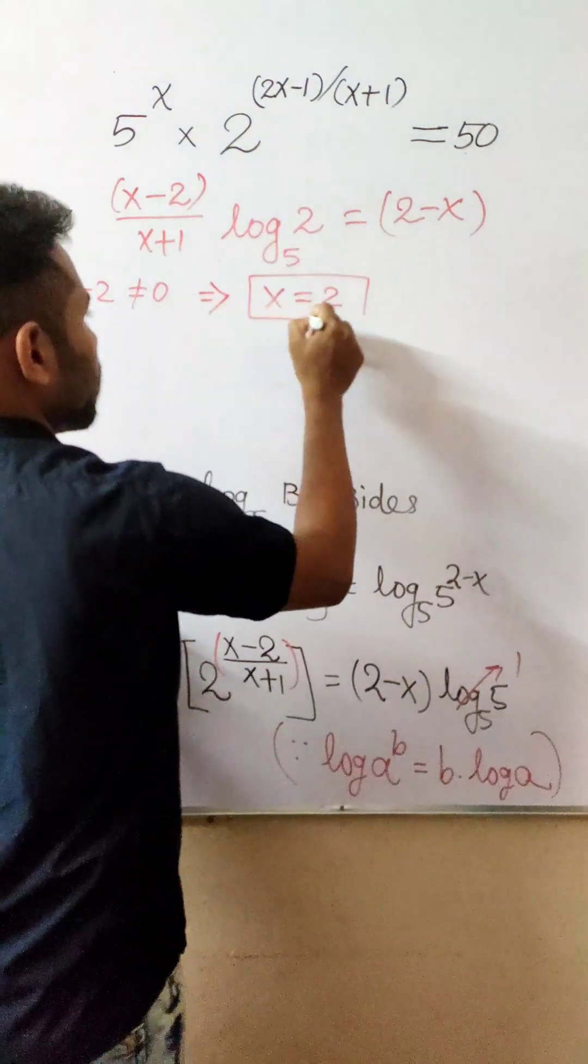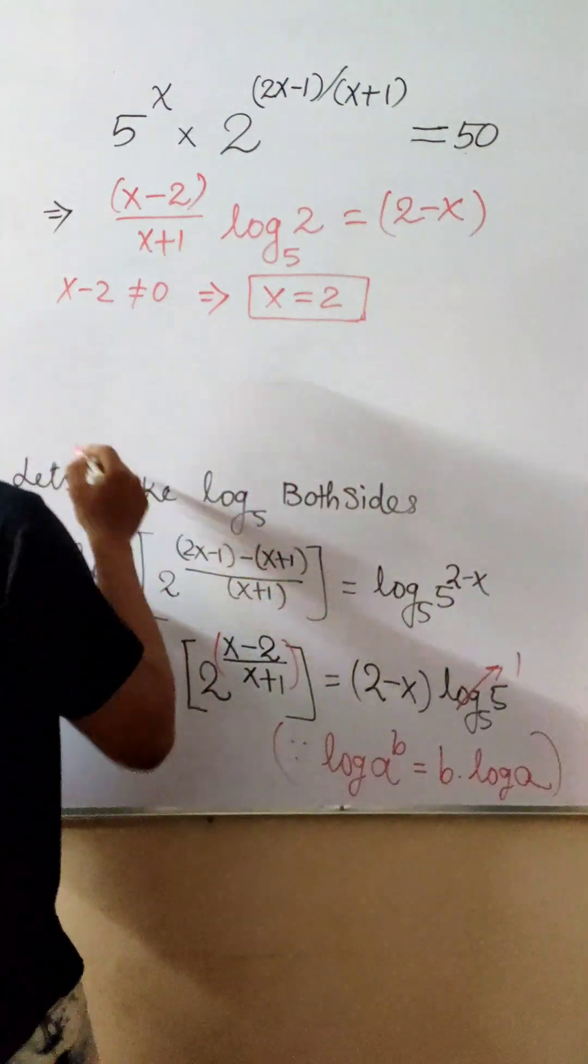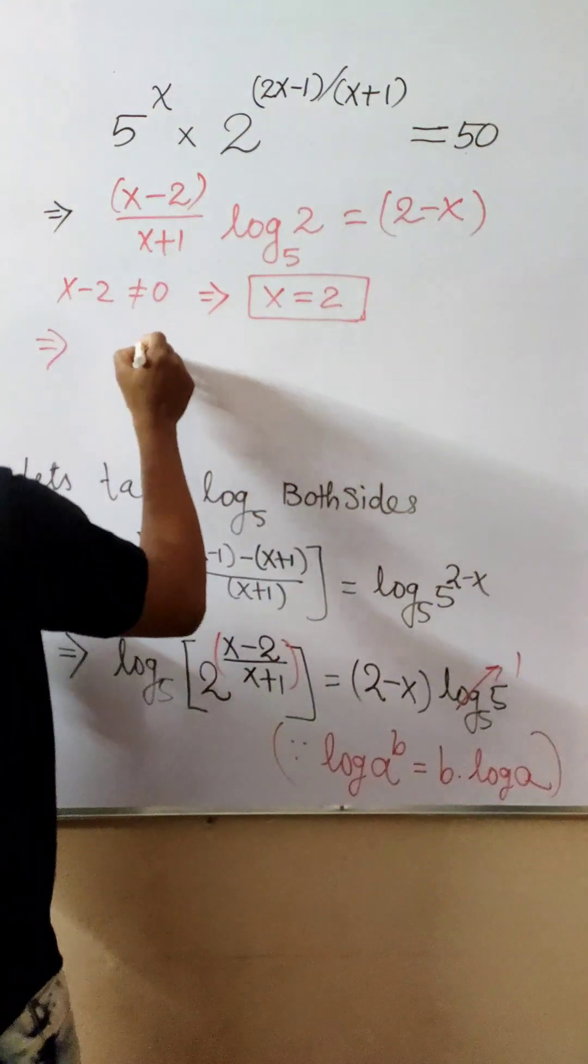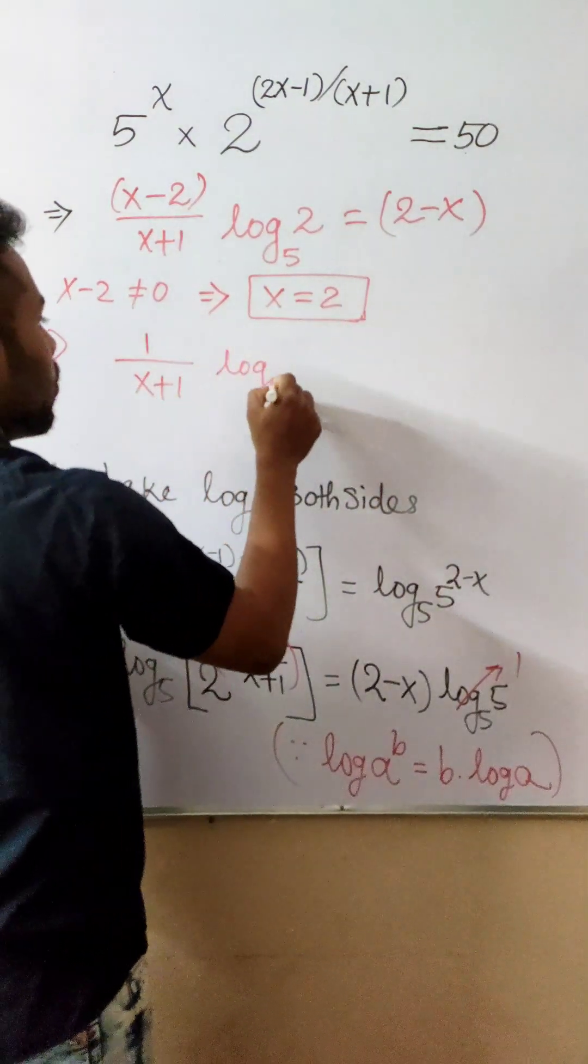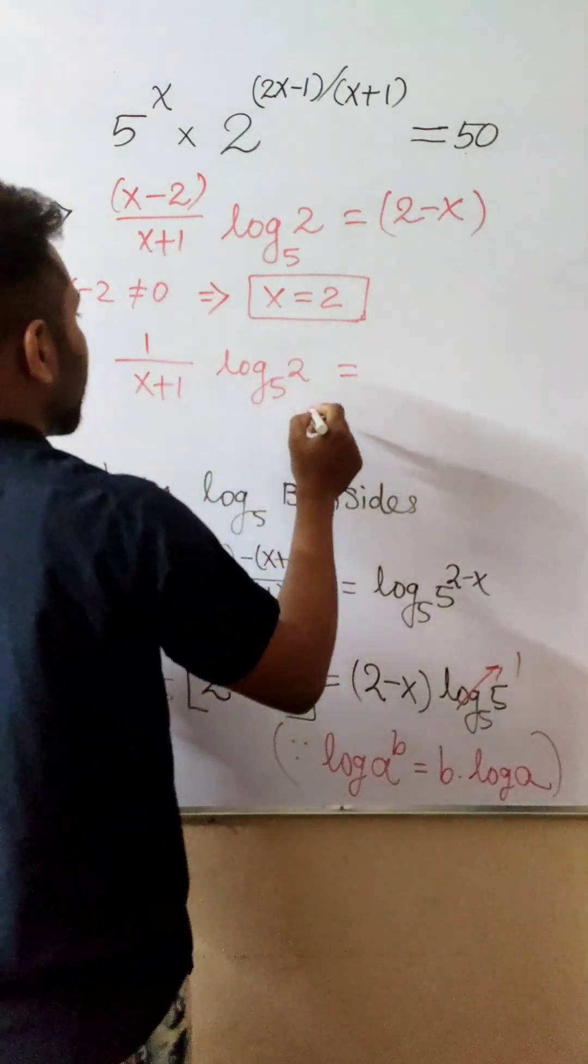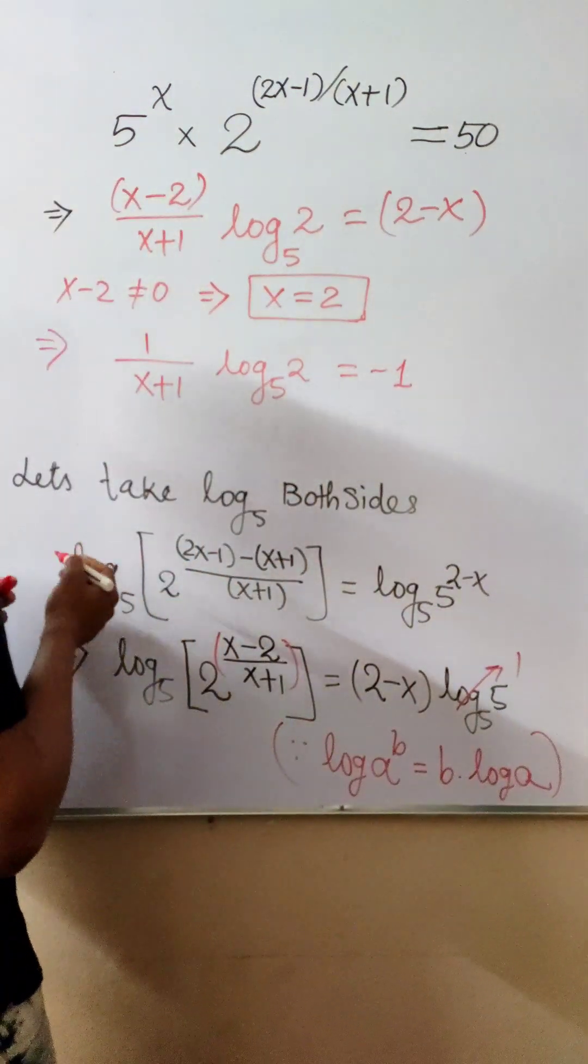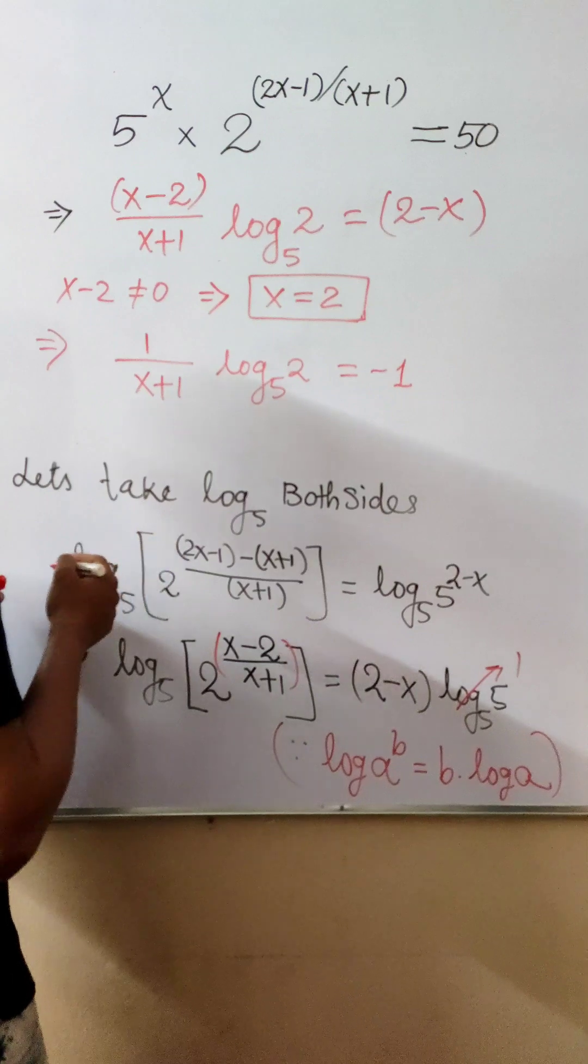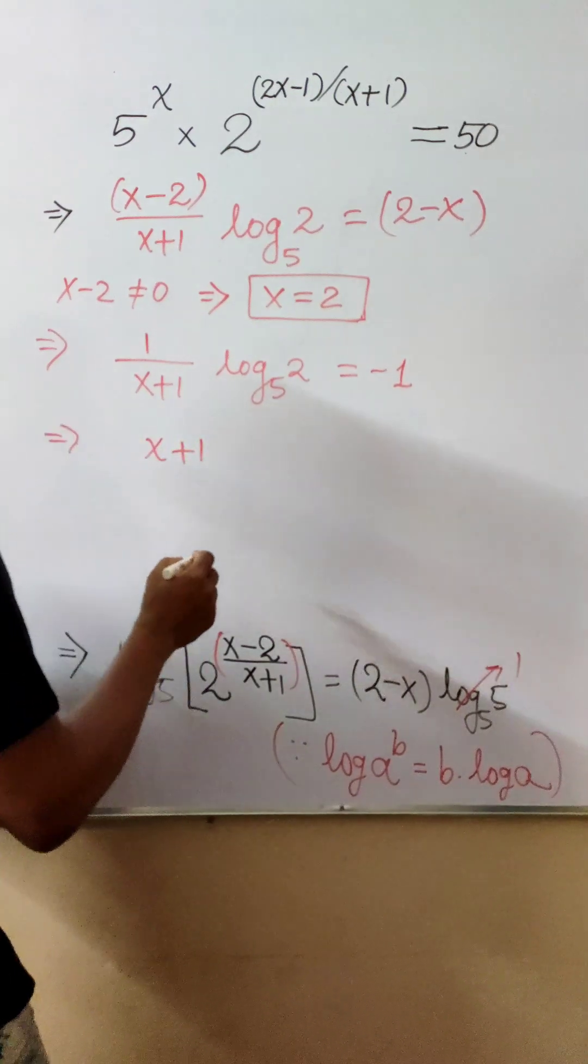If I cancel x-2, this is my first solution. If I cancel the (x-2) and (2-x) terms, I get -1. So now 1/(x+1) times log₅(2) equals -1. Therefore, x+1 equals...